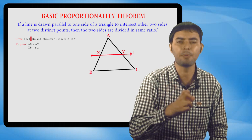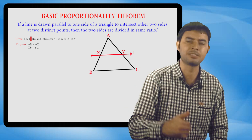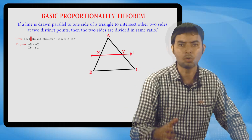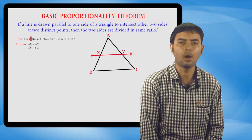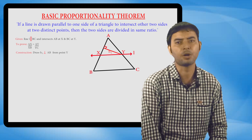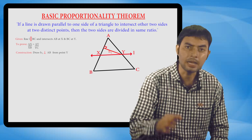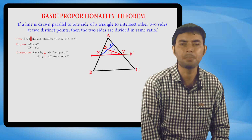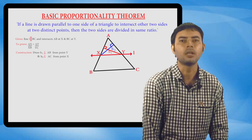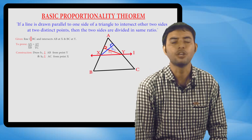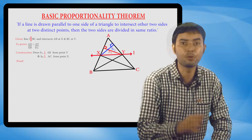It means AX upon XB will be equal to AY upon YC. For construction, draw H1 perpendicular to AB from point Y, and H2 perpendicular to AC from point X. Then join YB and XC.